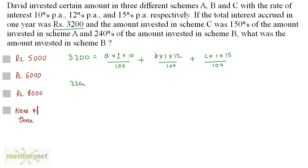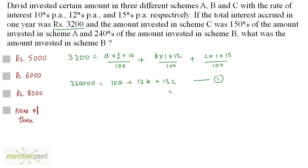Multiplying both sides by 100: 3,200 times 100, adding two zeros, gives 320,000 equal to 10A plus 12B plus 15C. This is equation 1. Note that A, B, and C are the amounts invested in schemes A, B, and C respectively.